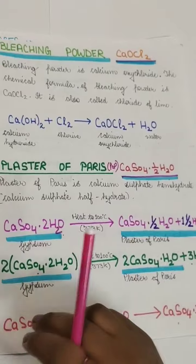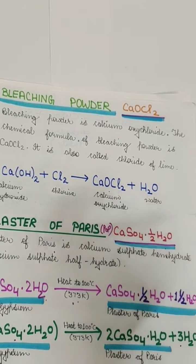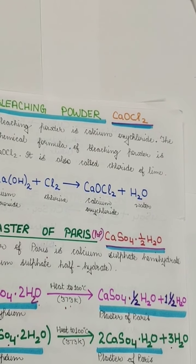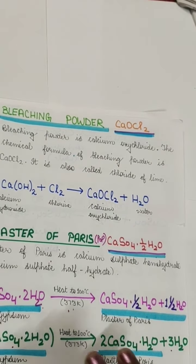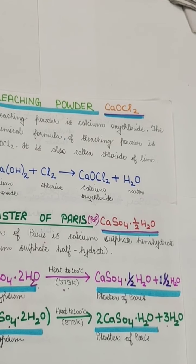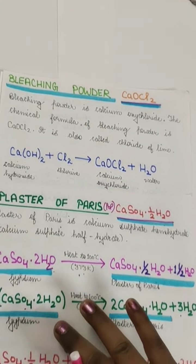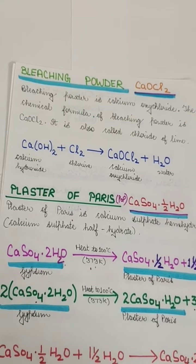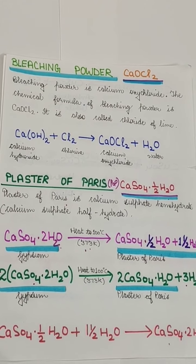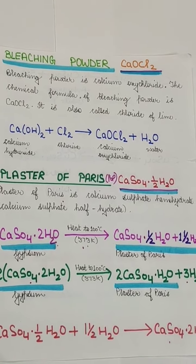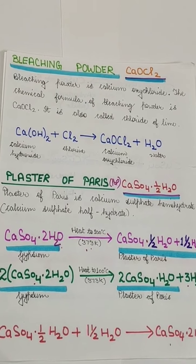This completes your chapter. It was an easy chapter. Please read about all the compounds — plaster of paris, bleaching powder, baking powder, washing powder, and sodium hydroxide — focusing on how they are formed and their uses, as these are very important parts of the chapter. If you have any problems, you can let me know in the WhatsApp group and I will explain in the next video. Till then, please do your work and stay safe. Thank you.